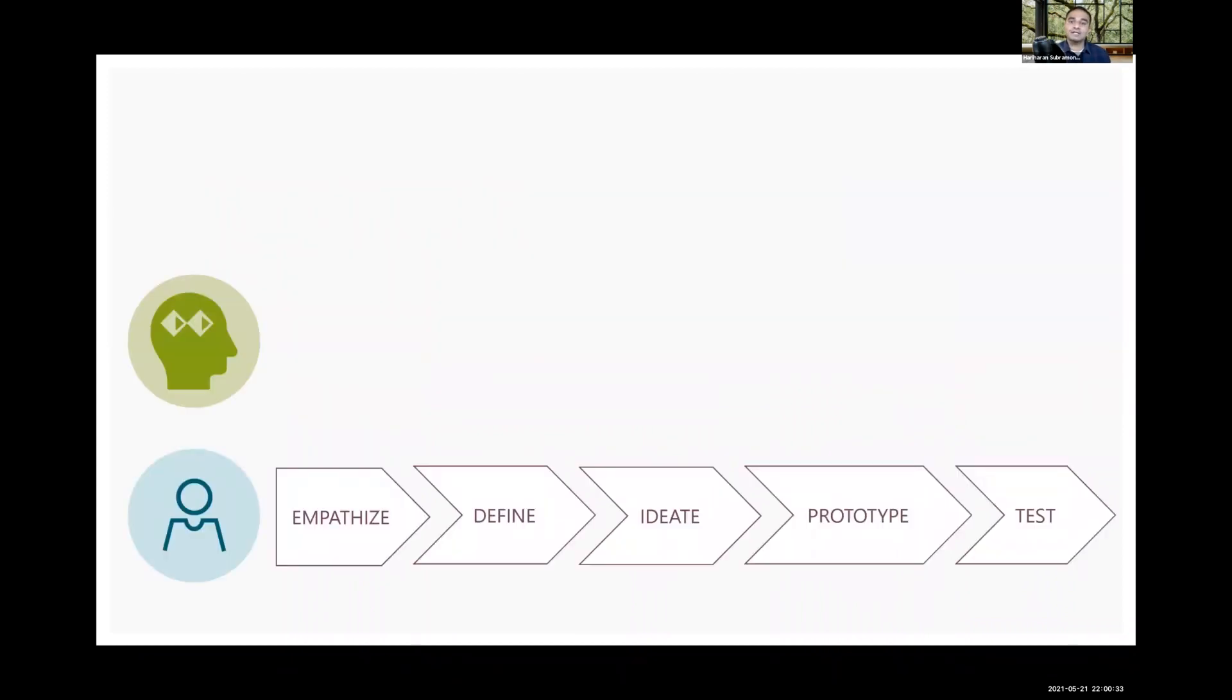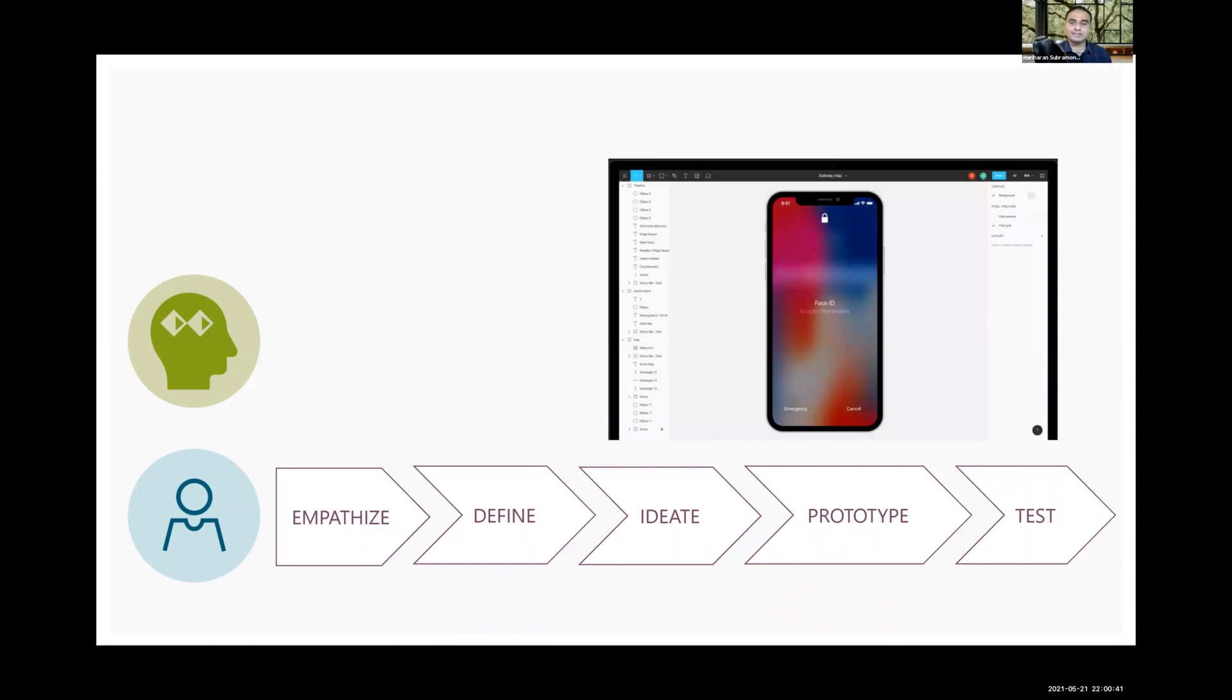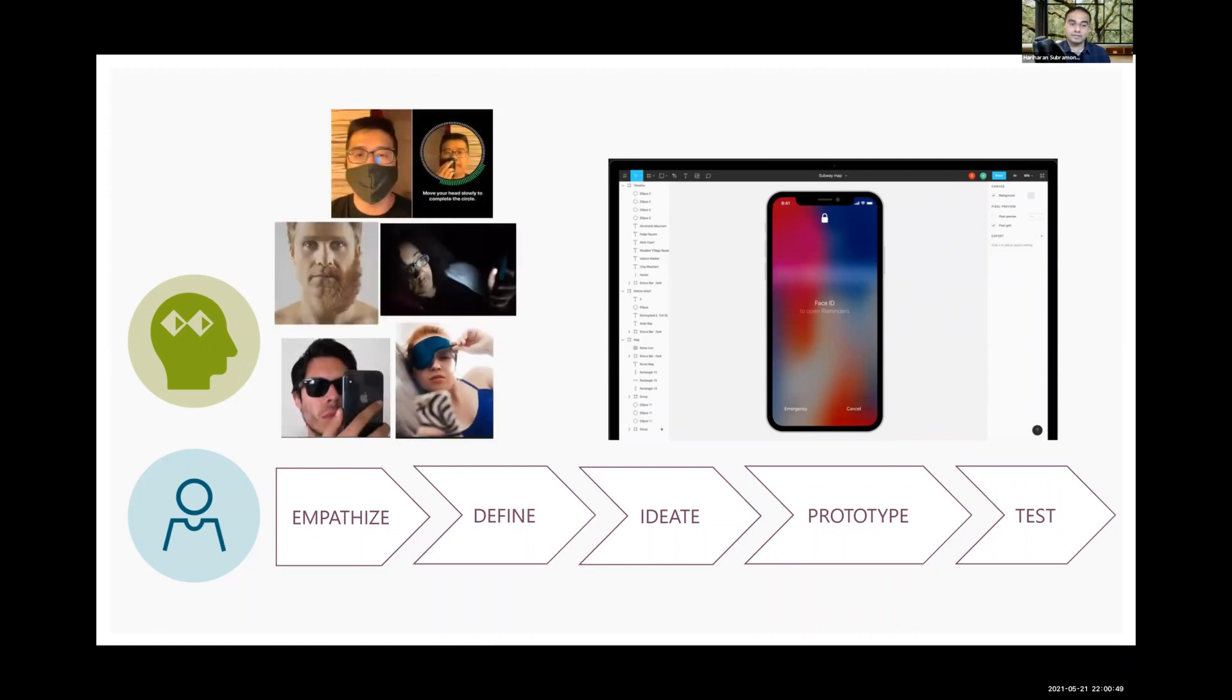Now imagine designing an AI-based phone unlock user experience, one that uses facial identification to authenticate the user. The user interface itself is quite simple and consists of a blank screen with a lock icon. And this interface experience should work for diverse users in a variety of usage scenarios.